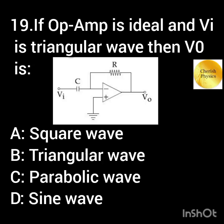If an op-amp is ideal and Vi is a triangular wave, then V0 is...